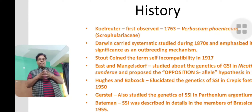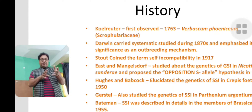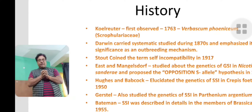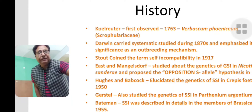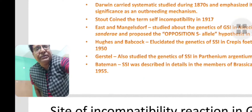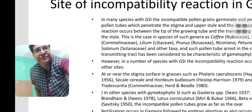In the same year, Gulstel studied Parthenium argentatum, another asteraceae family plant, and also found the opposition S allele working there. Later, in 1955, Bateman studied the Brassicaceae family in detail and the process was further established.